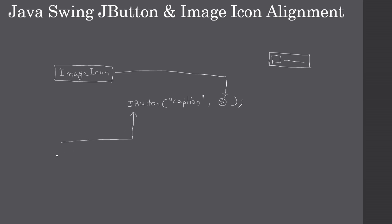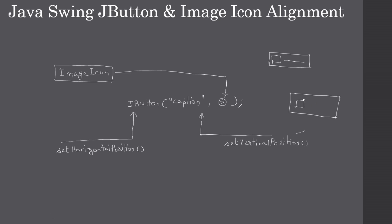Once the JButton is created, you can call setHorizontalTextPosition to control whether the text should appear to the left or the right of the image. You can also call setVerticalTextPosition — this tells whether the text should appear above or below the image. So left or right is decided by setHorizontalTextPosition, and top or bottom is decided by setVerticalTextPosition. Now let's go to the Eclipse demo.